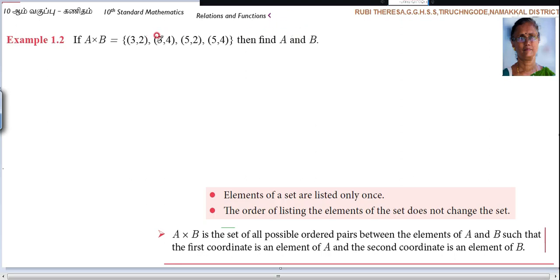They have given the ordered pairs. Here you see the note. A cross B is the set of all possible ordered pairs between the elements of A and B. They have given the ordered pairs such that the first coordinate is an element of A, and the second coordinate is an element of B.